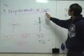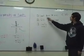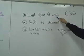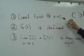My topic is the three requirements of limits. The first requirement of the limit is the limit exists at x equals c, and c is a constant.